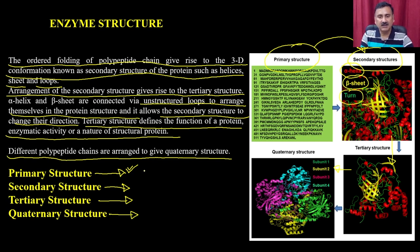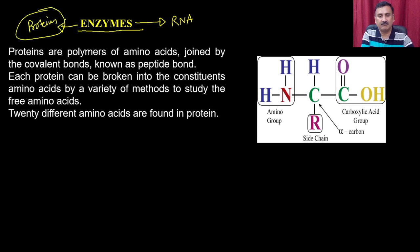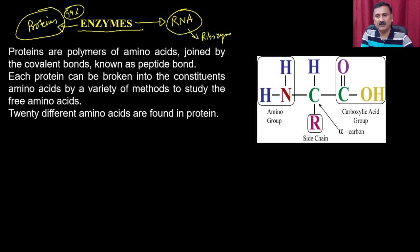Primary structure is nothing but the sequence of the polypeptide chain. Enzymes could be made up of RNA molecules, but more than 99 percent of enzyme molecules are made up of protein molecules. There is a very small fraction made up of RNA molecules, called ribozymes. Proteins are the polymer of amino acids joined by a covalent bond known as the peptide bond.